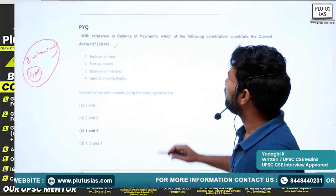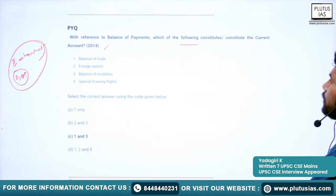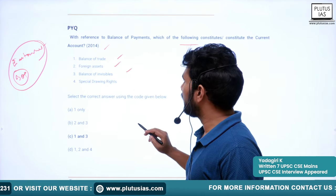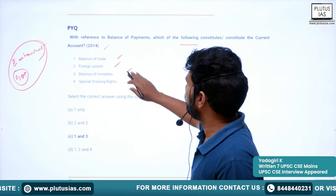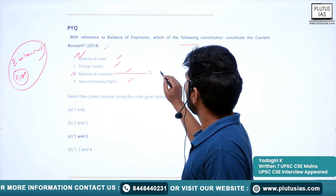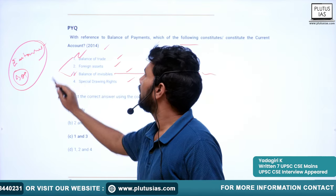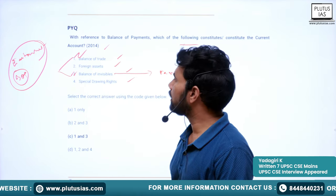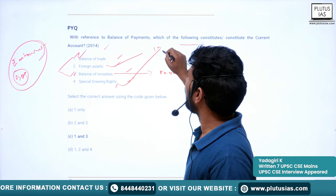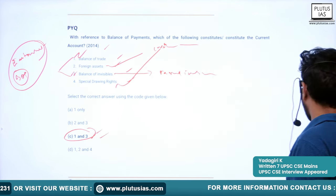Question from 2014: With reference to the balance of payments, which of the following constitutes the current account? Options: balance of trade, foreign assets, balance of invisibles, special drawing rights. The balance of trade and balance of invisibles are included in the current account. Foreign assets and special drawing rights come under the capital account. The correct option is options one and three — balance of trade and balance of invisibles.